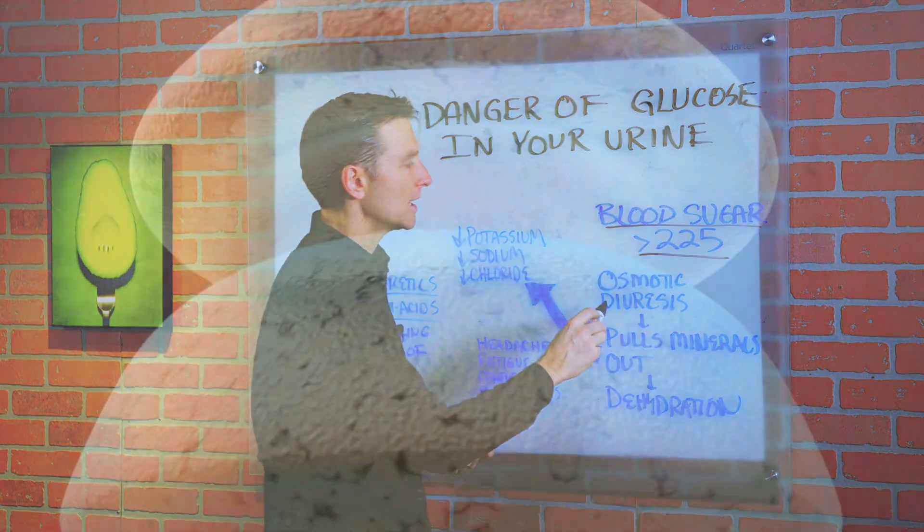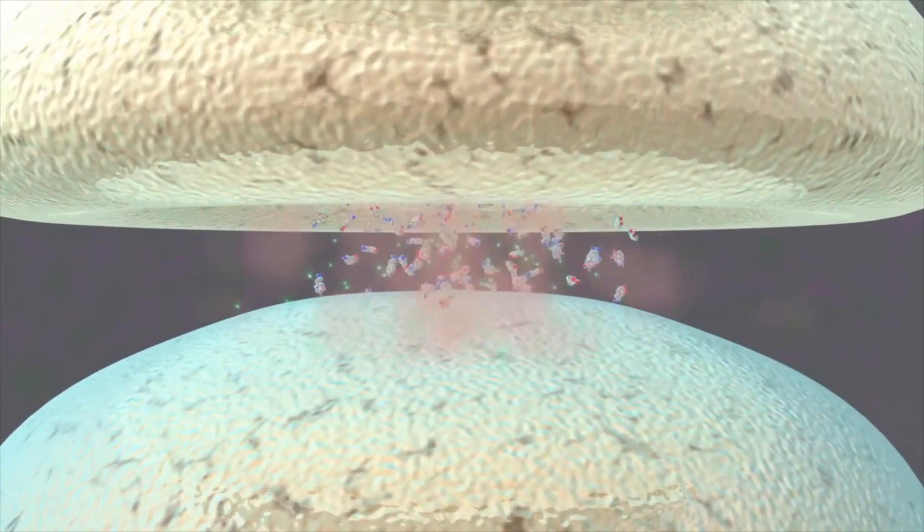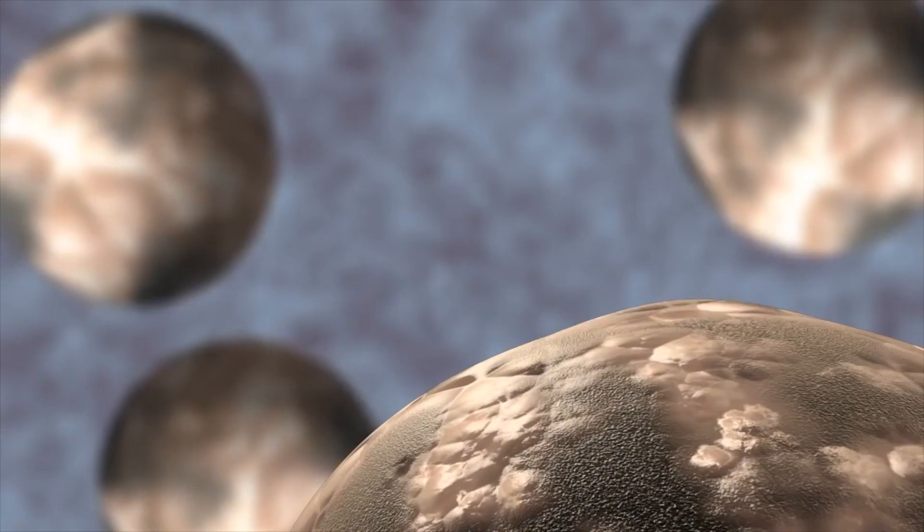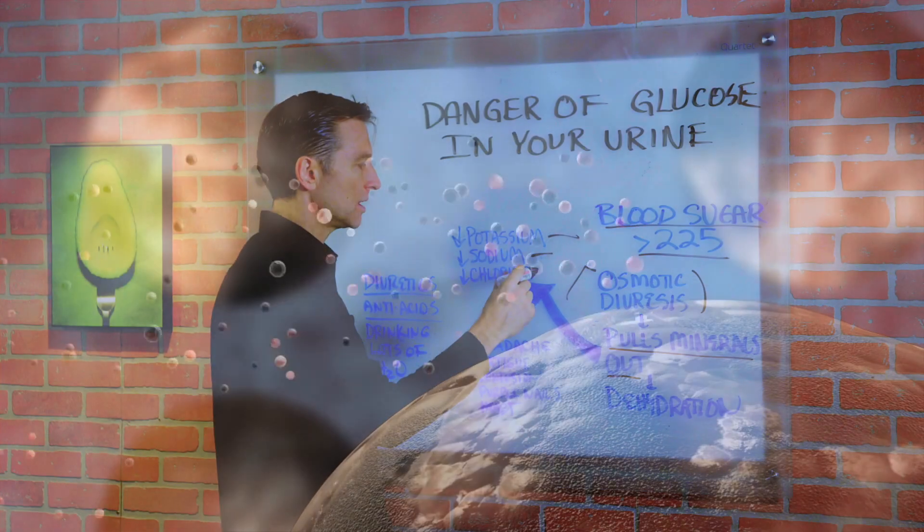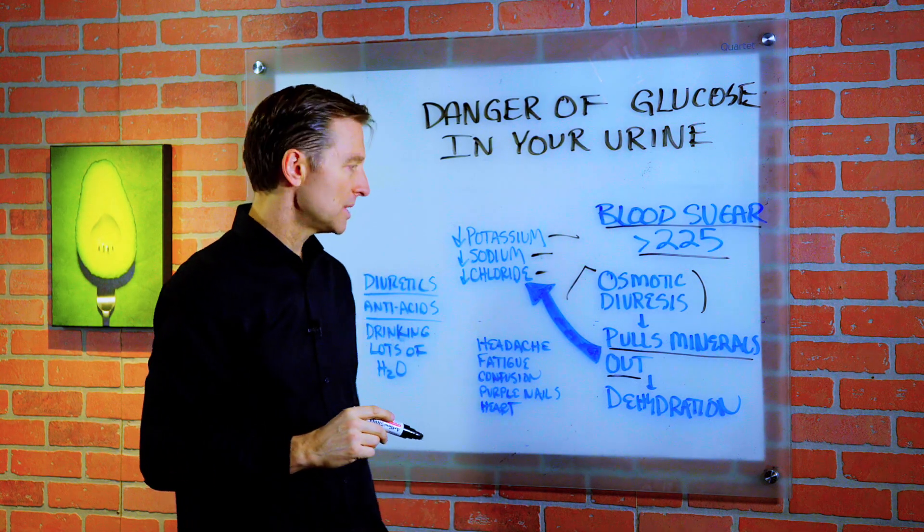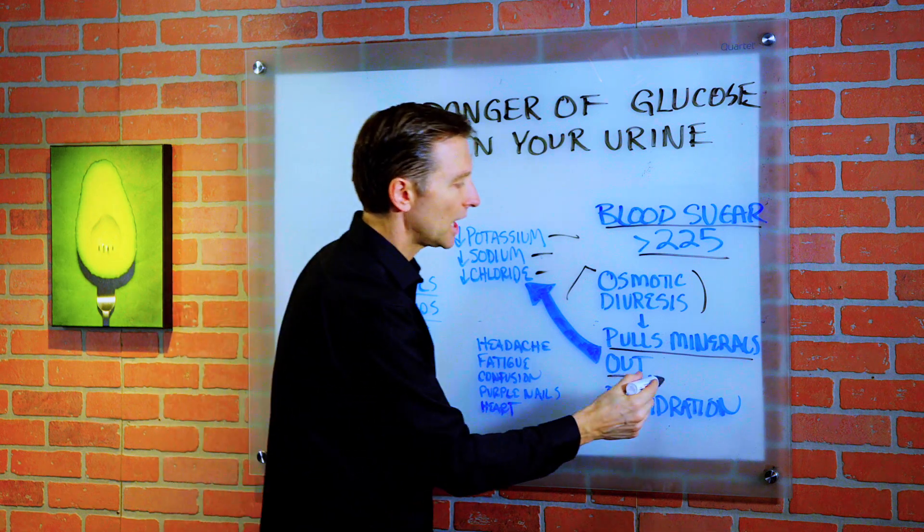It's called osmotic diuresis. And the complication of having this is that it pulls out minerals, specifically potassium, sodium, chloride, and other minerals. And it leaves you dehydrated.